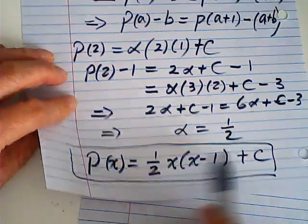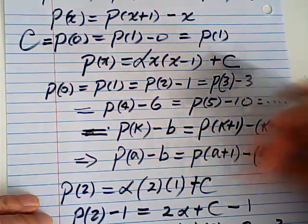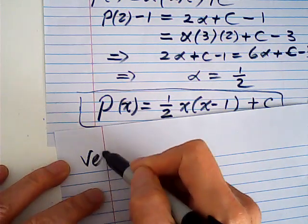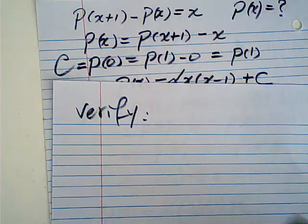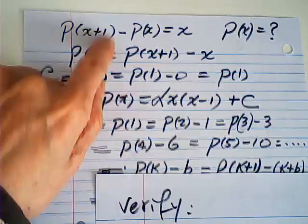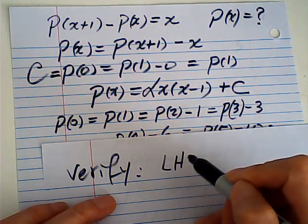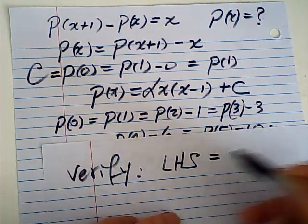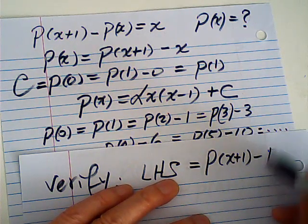I presume that this is my solution based on my discussion over those calculations. So let me verify. Now the left-hand side is equal to P(x+1) minus P(x).